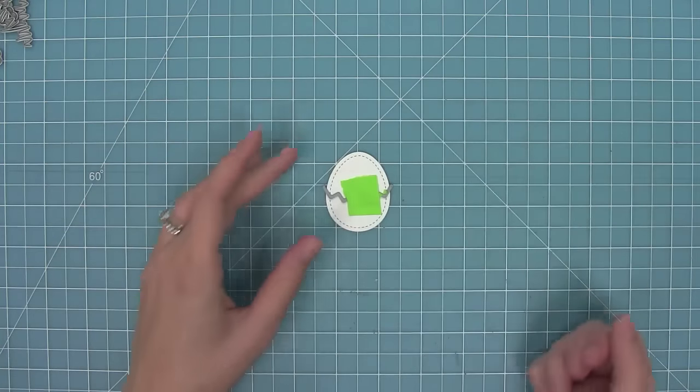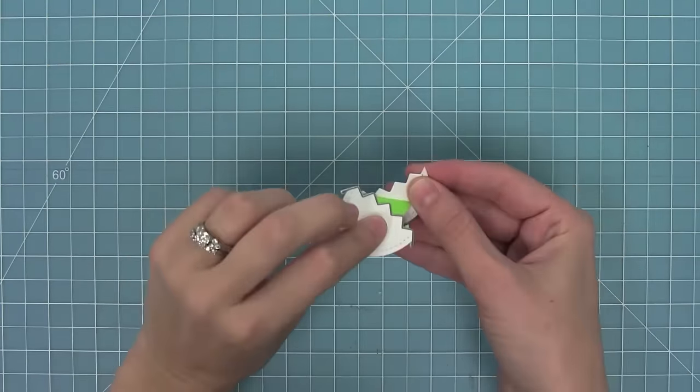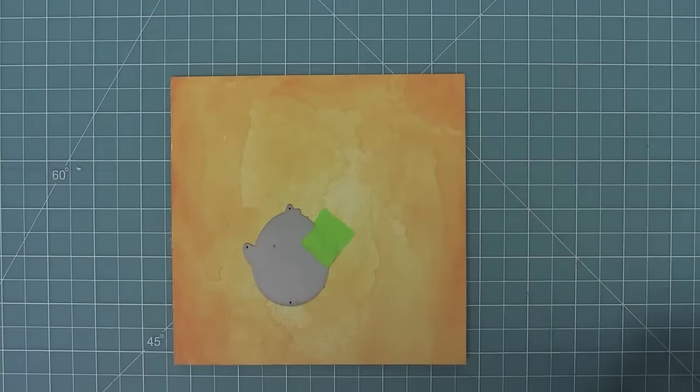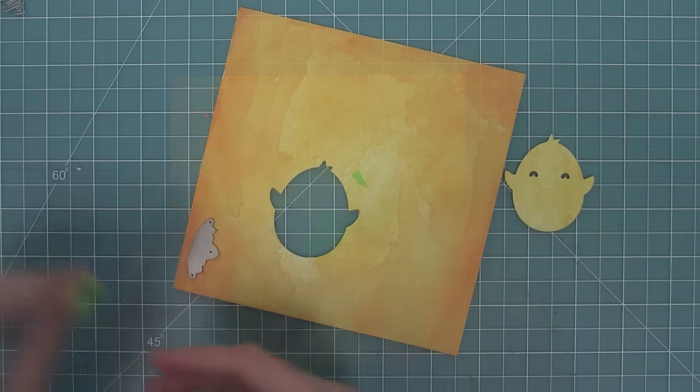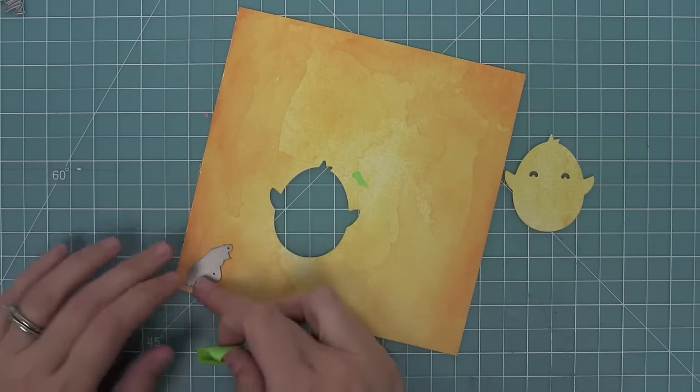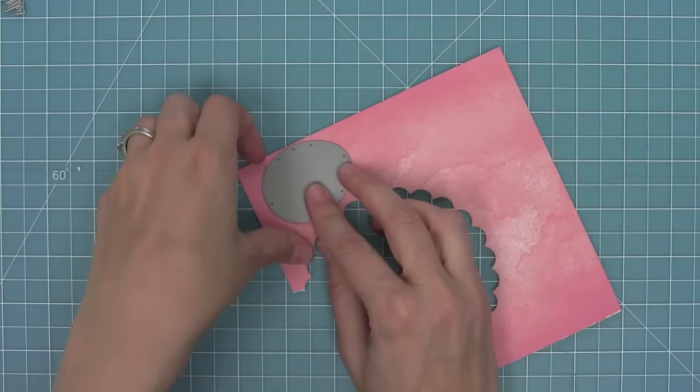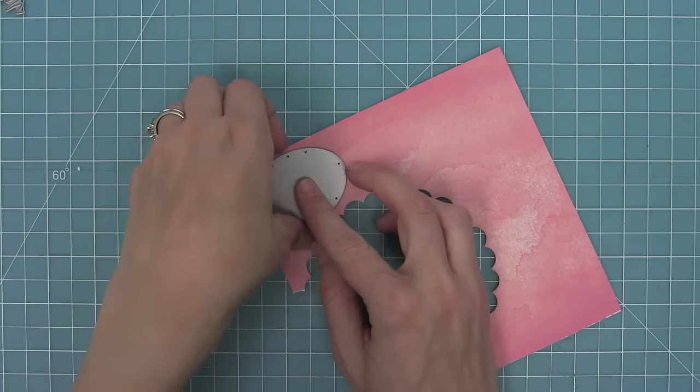I've die cut a white egg and I'm going to crack it in half with that little chevron die. Then I'm going to start working on more eggs. I've cut a polka dotted egg from purple then I'm going to work on my little chick and cut it from different areas of that yellow paper. So I cut the beak and the eggs from a darker area and then the chick from a lighter area.